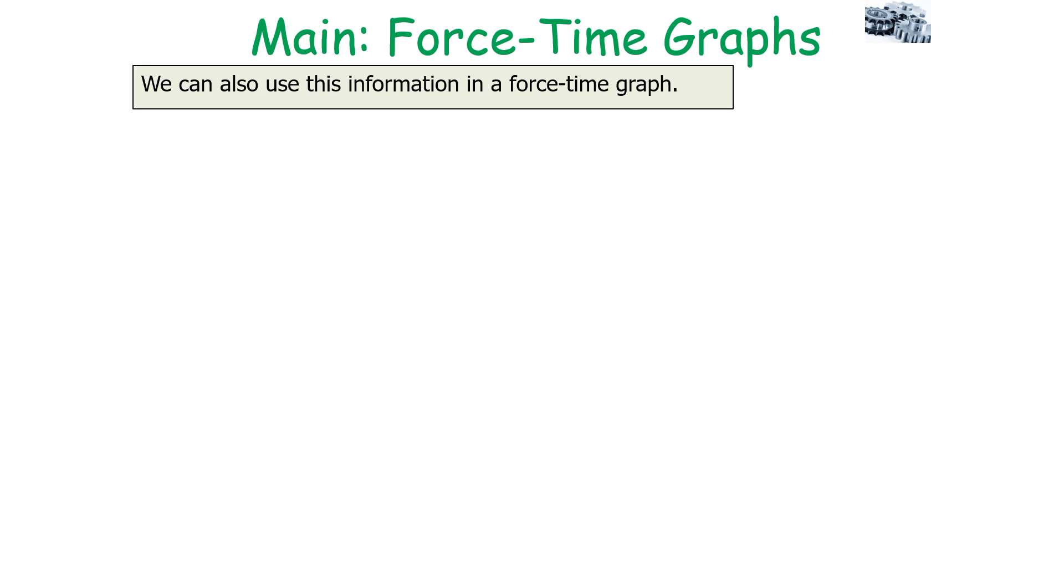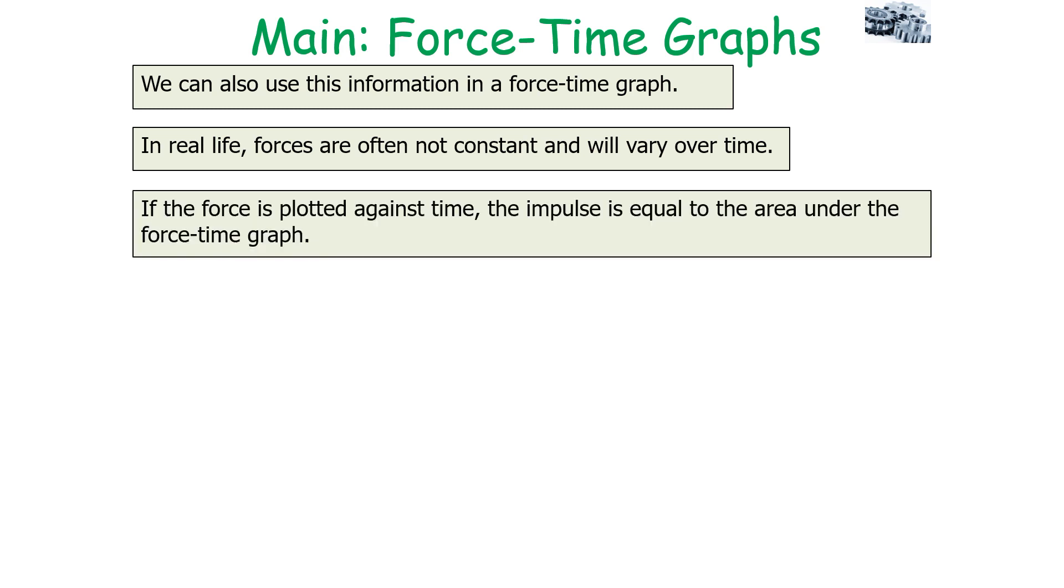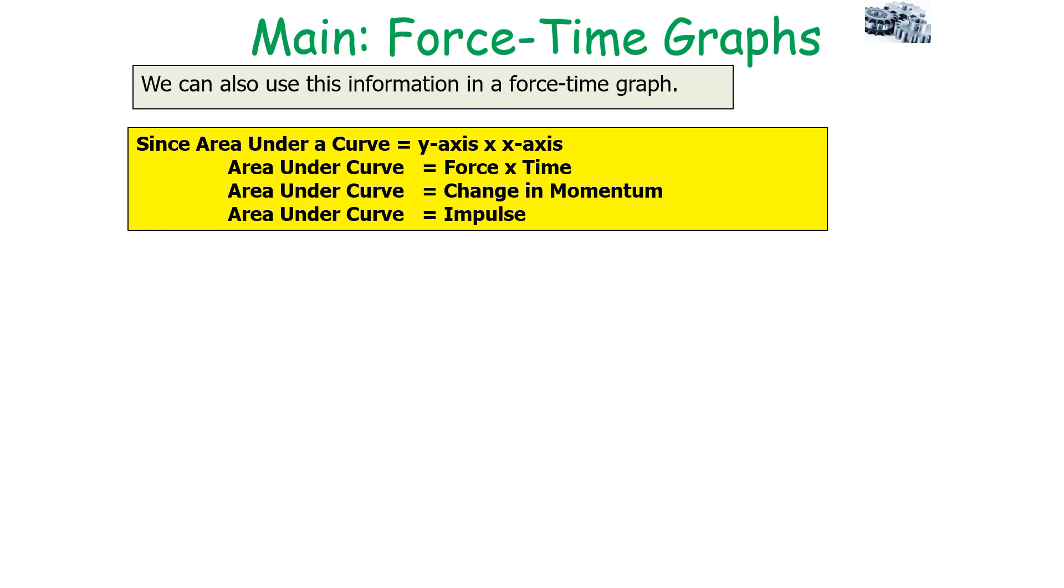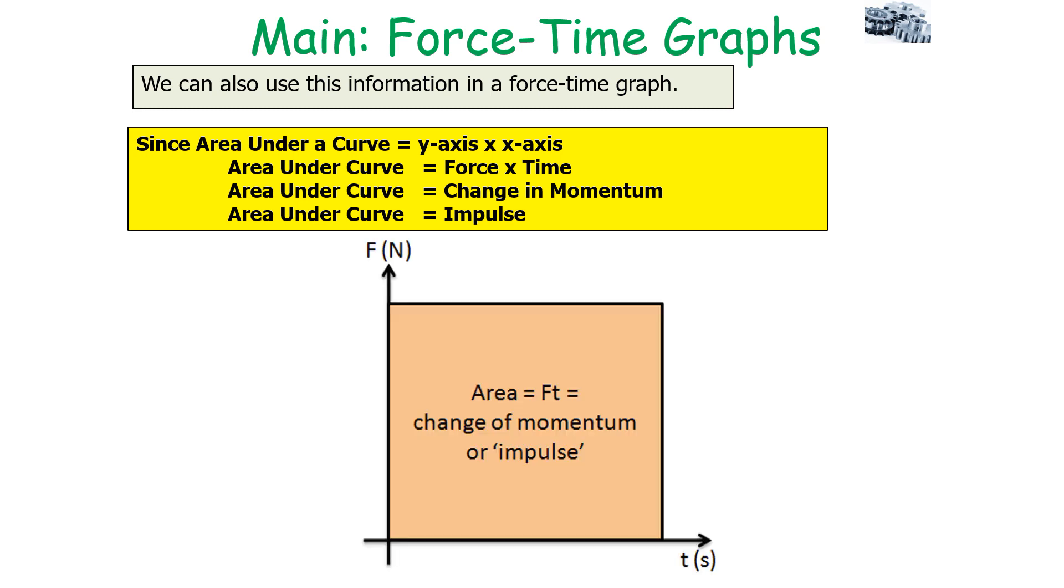We can also use this information in a force-time graph. In real life, forces are not often constant and will vary over time. So if we plot the force against the time, the impulse is in fact equal to the area under the force-time graph. Because, you know, the area under the curve is the y-axis times the x-axis. So it's force times time, which is change in momentum, which is the impulse. So if you have your force-time graph, you can work out your change of momentum or impulse by working out the area.